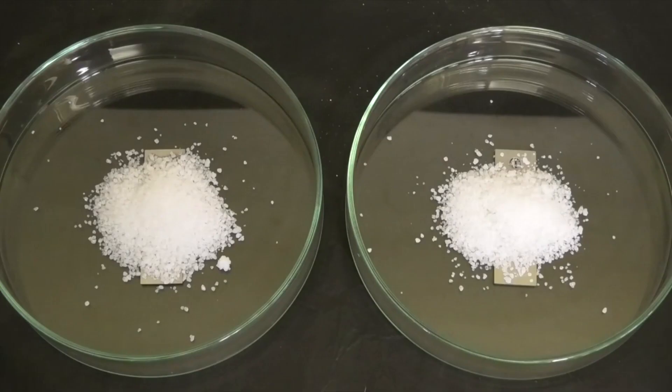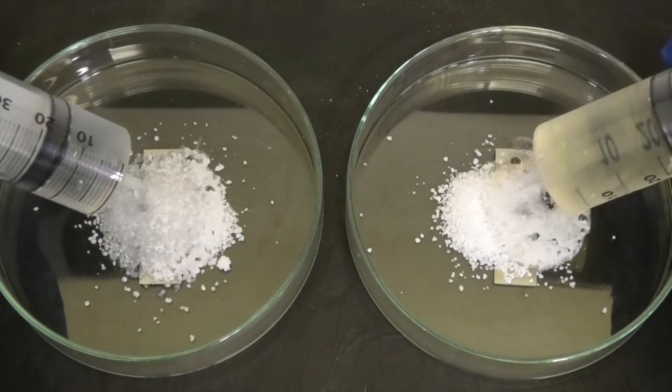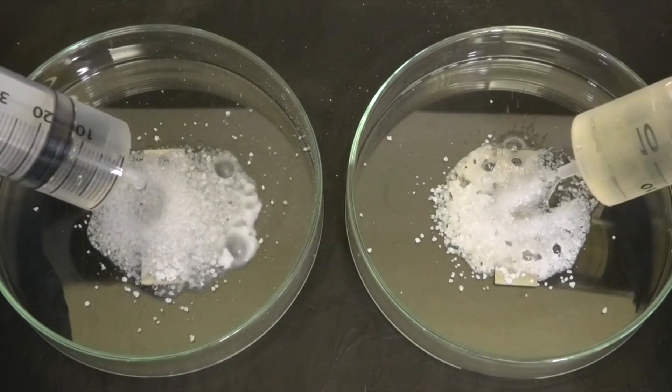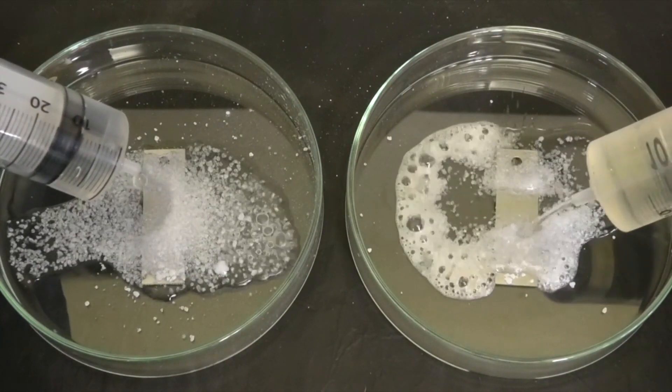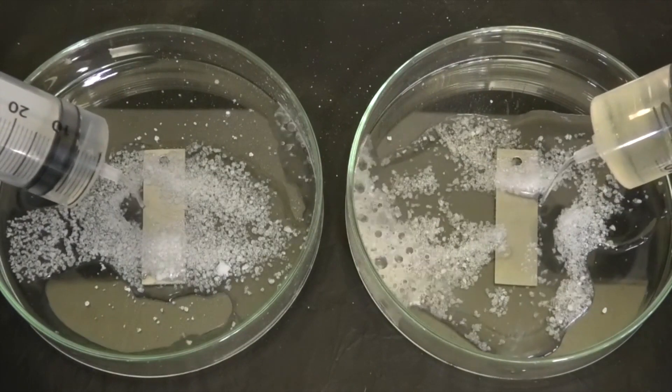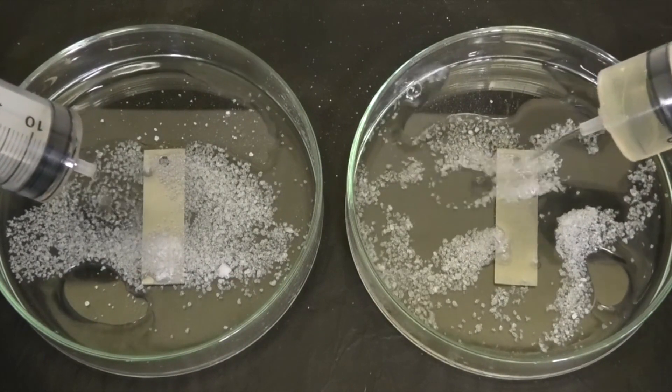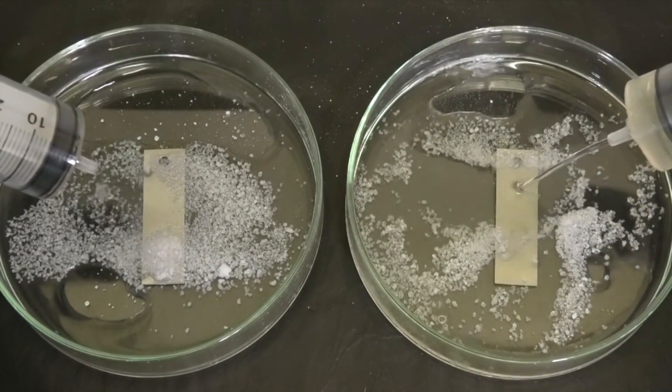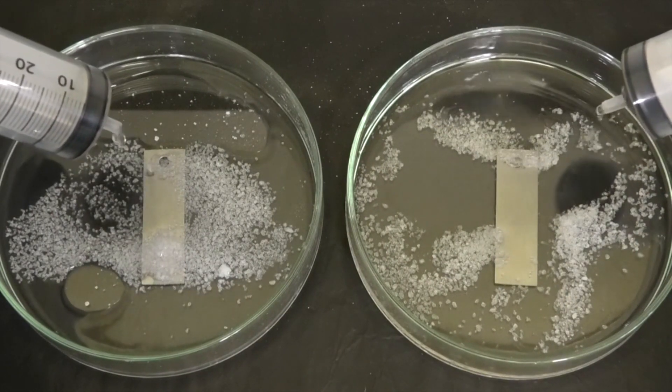Solid ammonium chloride salts were poured onto new corrosion coupons placed in both petri dishes. Water is added to the left sample and ACF solution to the right sample. To accelerate the corrosion attack, both petri dishes are placed on a heating plate at 140 degrees Celsius for about 25 minutes. This experiment is presented in fast mode, showing the different results.